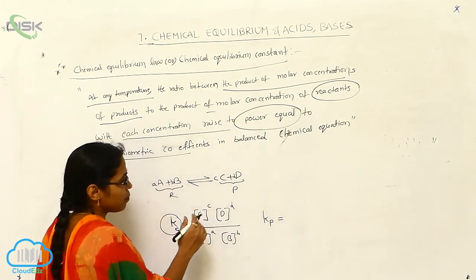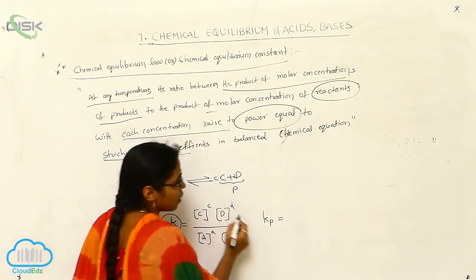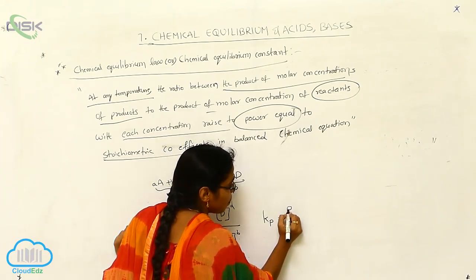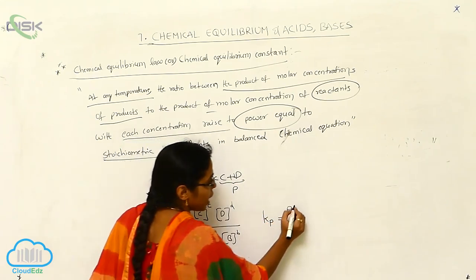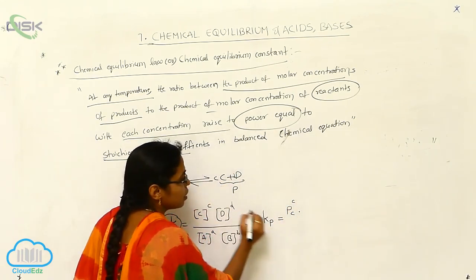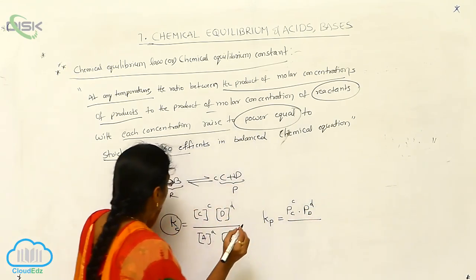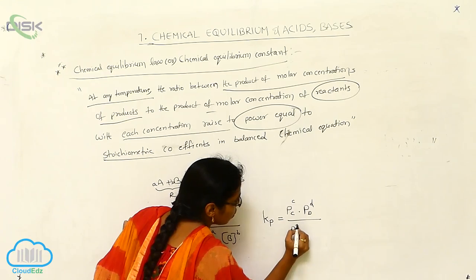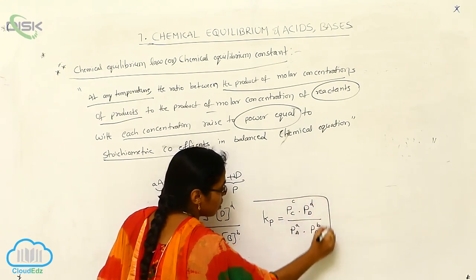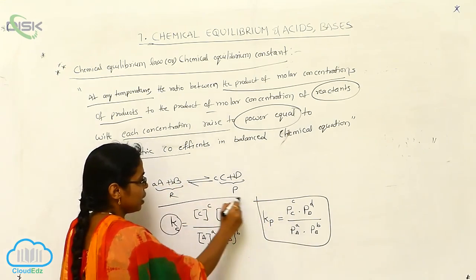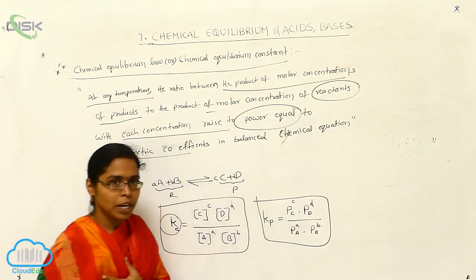For Kp, you can write the partial pressures of the products by partial pressures of the reactants. For example, partial pressure of C is Pc to the power c, and Pd to the power d. And for the denominator you write Pa to the power a and Pb to the power b. It is also called as the chemical equilibrium constant — this is the concentration terminology and this is the partial pressure terminology.